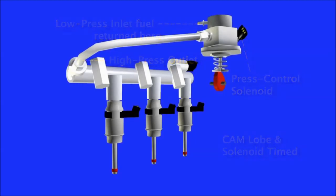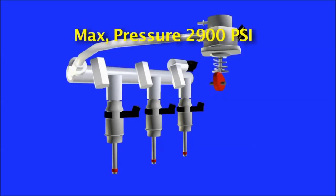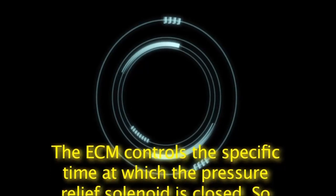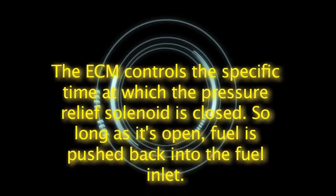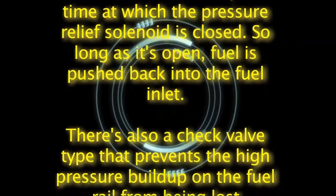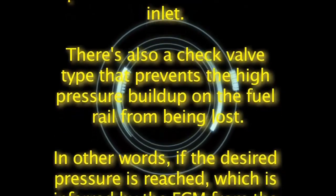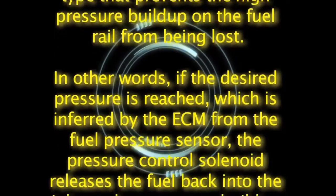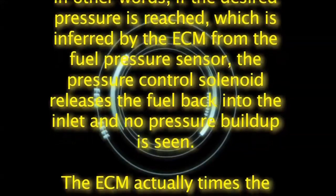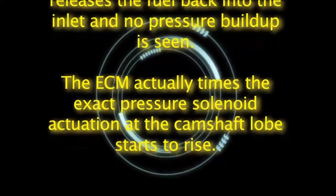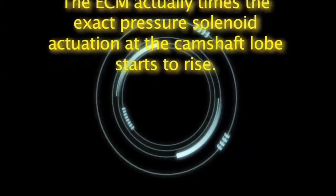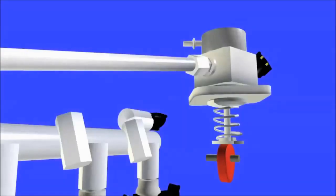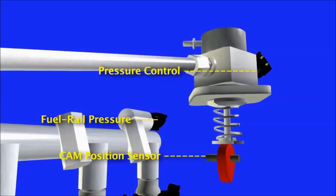Any excess fuel pressure is released back into the fuel inlet. The ECM controls the specific time at which the pressure relief solenoid is closed — so long as it's open, fuel is pushed back into the fuel inlet. There is also a check valve that prevents the high pressure build-up on the fuel rail from being lost. If the desired pressure is reached, as inferred by the ECM from the fuel pressure sensor, the pressure control solenoid releases the fuel back into the inlet. The ECM actually times the exact pressure solenoid actuation as the camshaft lobe starts to rise, and it needs to know camshaft position and fuel rail pressure.